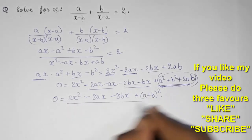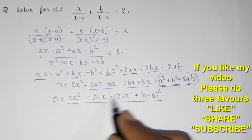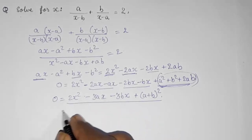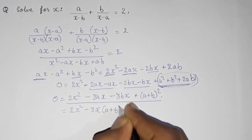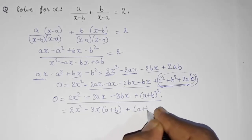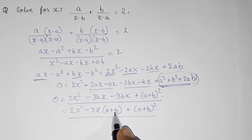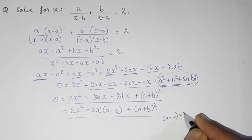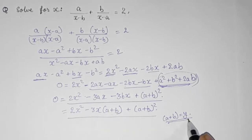So the equation becomes: 2x squared minus 3x(a plus b) plus (a plus b) squared equals 0. We can see x is common in the x terms and minus 3 is also a factor. To simplify, let y equal (a plus b). Then the equation becomes 2x squared minus 3xy plus y squared equals 0.